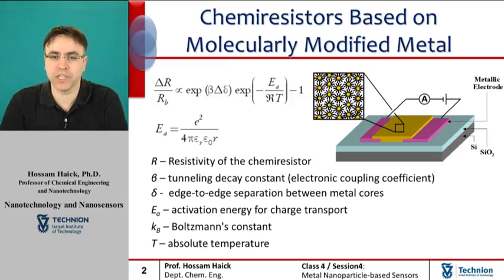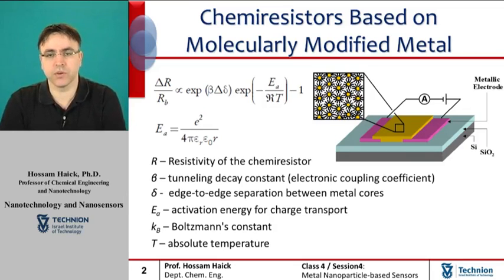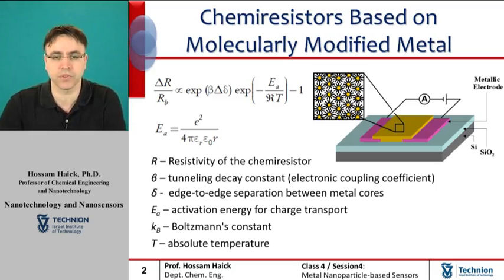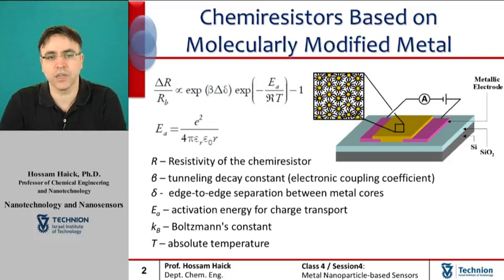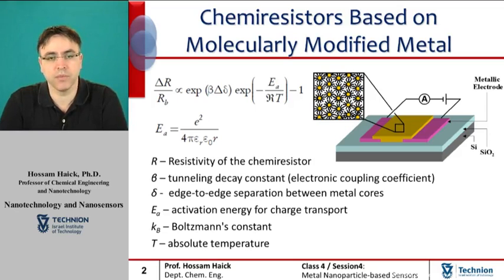The chemoresistor term is a combination of two words, chemical and resistance, which relates to the electrical resistance. The working principle of a chemoresistor based on molecularly modified metal nanoparticles is as follows. Metallic electrodes are connected to a voltage source and molecularly modified metal nanoparticles are assembled between the electrodes. In this configuration, the organic ligands are responsible for the absorption of analytes, and the nanoparticles are responsible for conducting the electrical current from one electrode to the other. When voltages are supplied to this system, changes in the electrical properties due to absorption of analytes can be monitored.